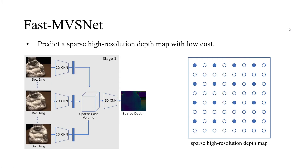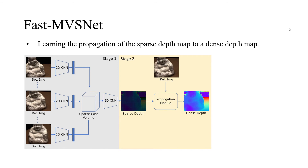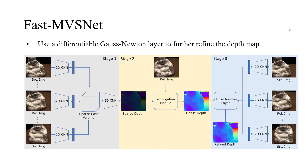Therefore, we propose FastMVSNet. We first predict a sparse high-resolution depth map at low cost, then we propagate the sparse depth map to a dense one. Finally, we use a differentiable Gauss-Newton layer to further refine the depth map.